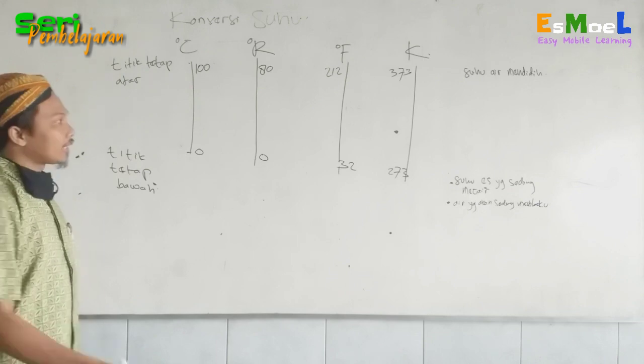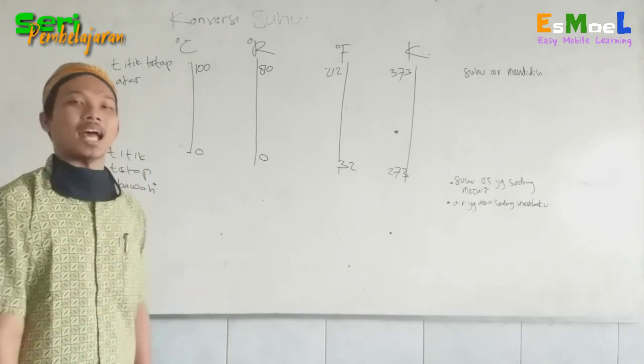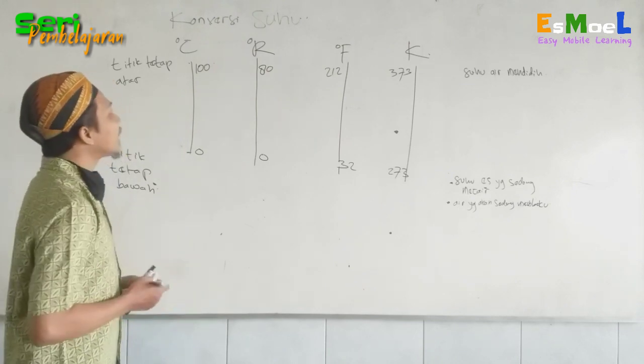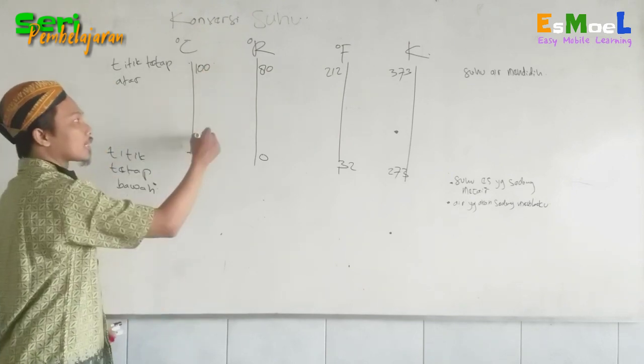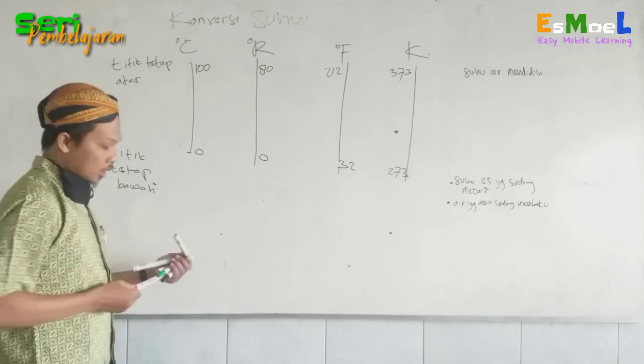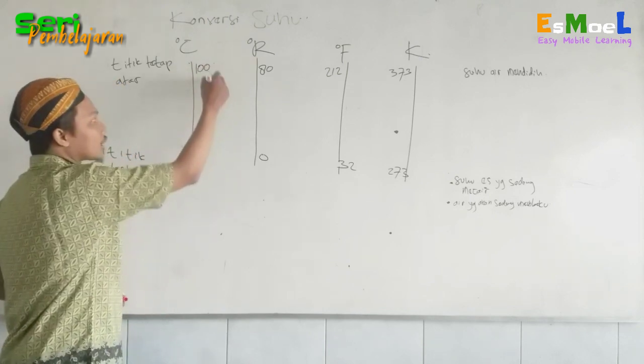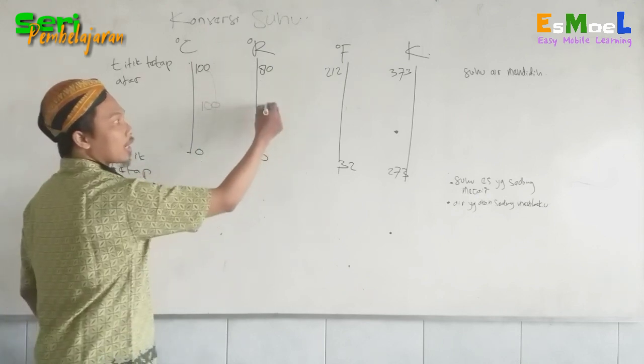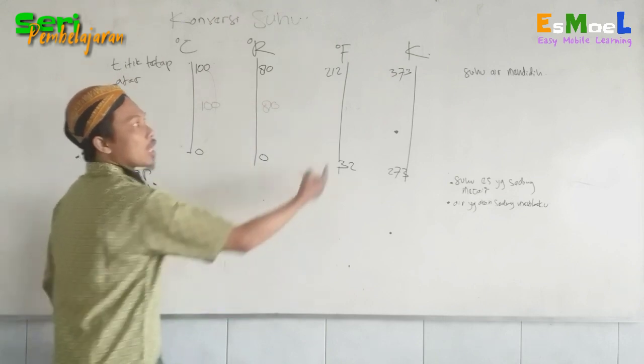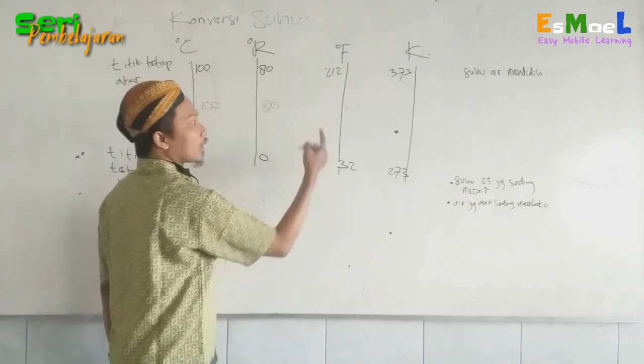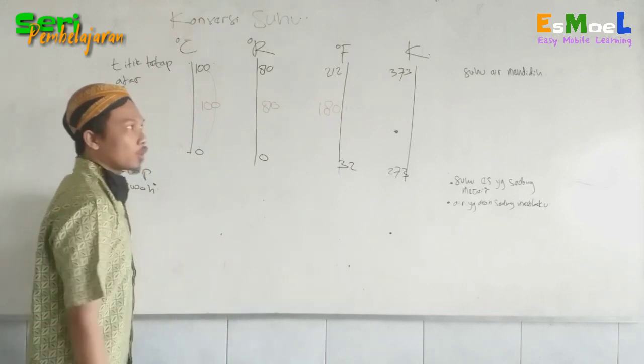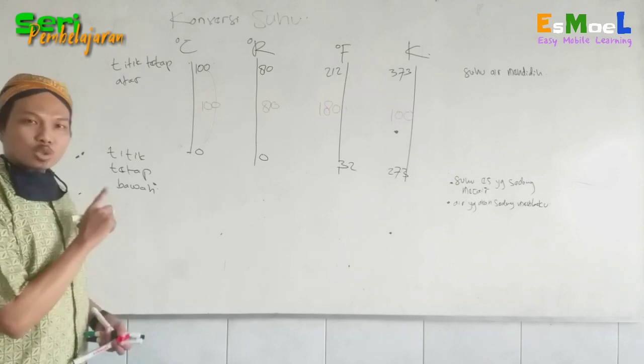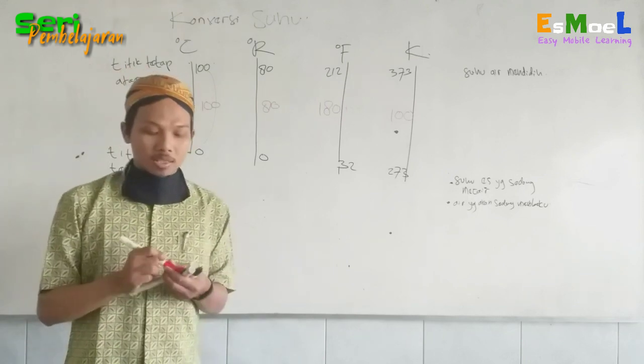Sekarang dari angka-angka tersebut silahkan dicari selisihnya. Ya, dikurangkan. Ini selisih dari 100 dikurangi 0. Selisihnya di sini: 100 dikurangi 0, tentu di sini selisihnya ketemu 100. 80 dikurangi 0 adalah 80. 212 dikurangi 32 adalah 180. Dan 373 dikurangi 273 adalah 100. Langsung disederhanakan dari bentuk yang paling sederhananya.